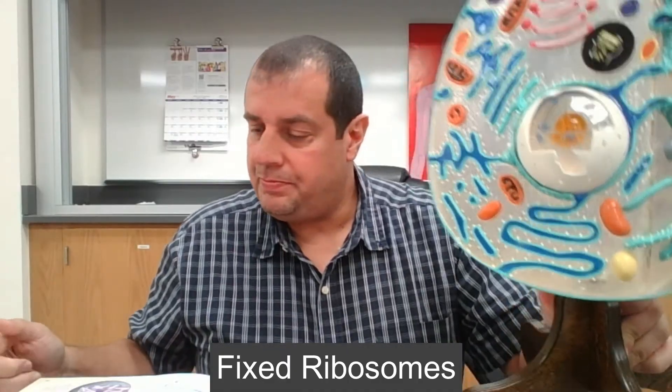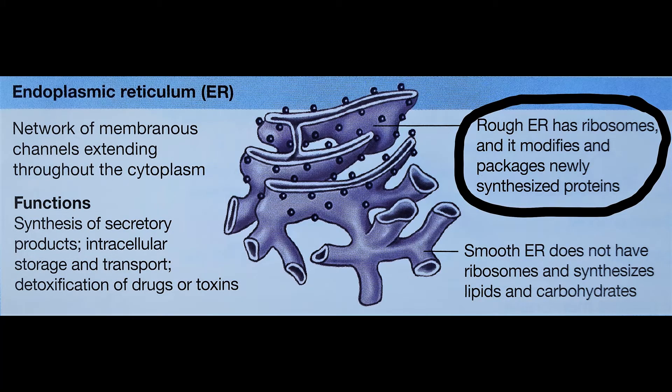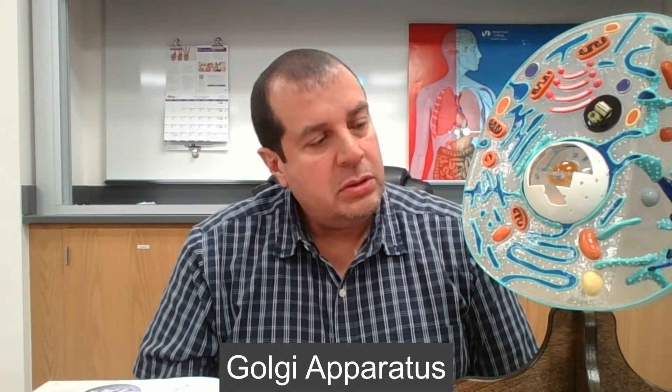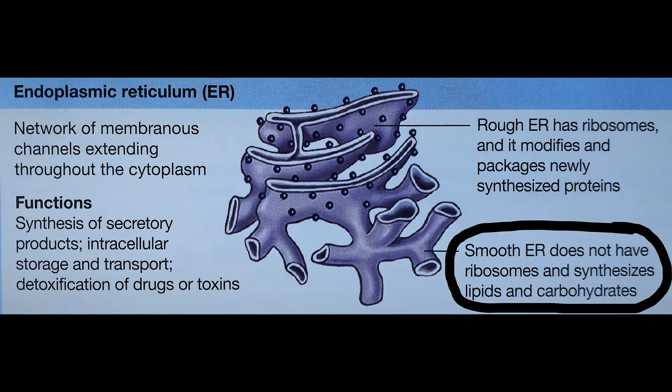The rough endoplasmic reticulum has little dots on it — those are the fixed ribosomes. It modifies and packages newly synthesized proteins, which then travel through these channels to the Golgi apparatus where they are stored and distributed. The smooth endoplasmic reticulum does not have ribosomes and instead synthesizes lipids and carbohydrates.